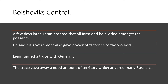A few days later, Lenin ordered that all farmland be divided amongst the peasants. His government also gave power of the factories to the workers. Lenin pulled the troops out of World War One by signing a separate truce with Germany. The truce gave away a good amount of territory to the Germans, which angered many Russians, but at this point Lenin had pulled the troops out of the war.